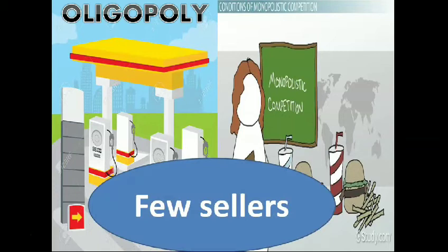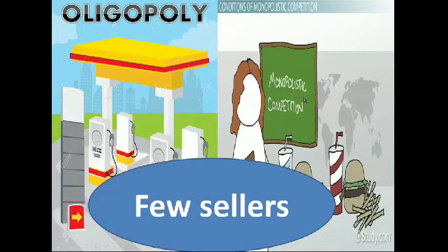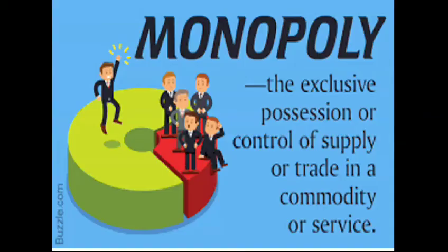Next is medium profit, where oligopoly and monopolistic competition belong, because they have few sellers. For oligopoly, examples include gasoline stations such as Shell, Petron, Petronas, Caltex, and Flying V. For monopolistic competition, examples include Jollibee, Burger King, and McDonald's — these are few sellers under medium profit.